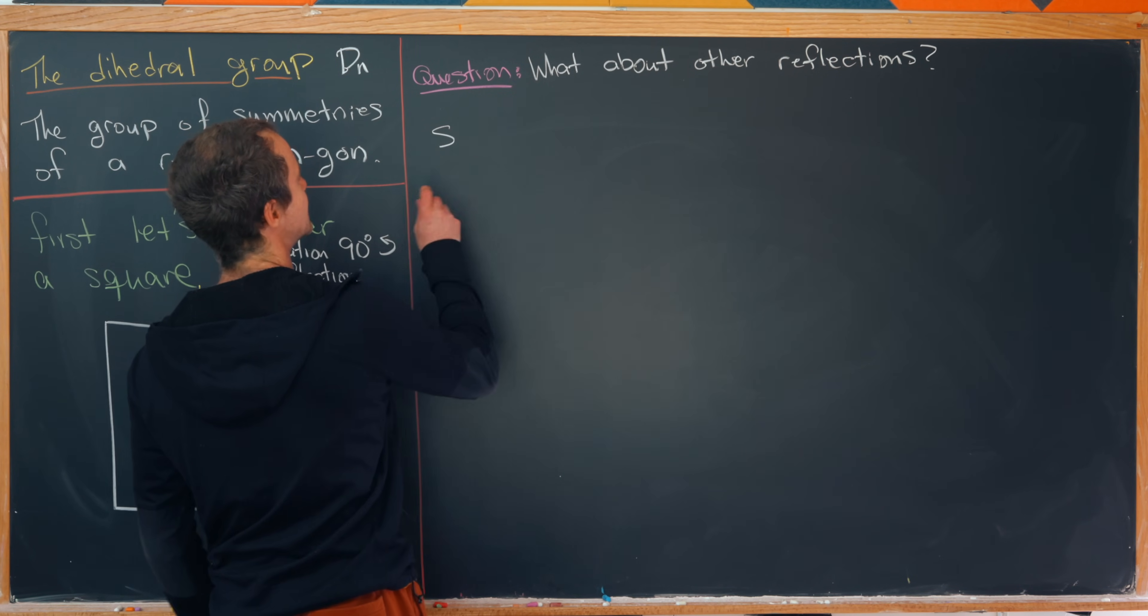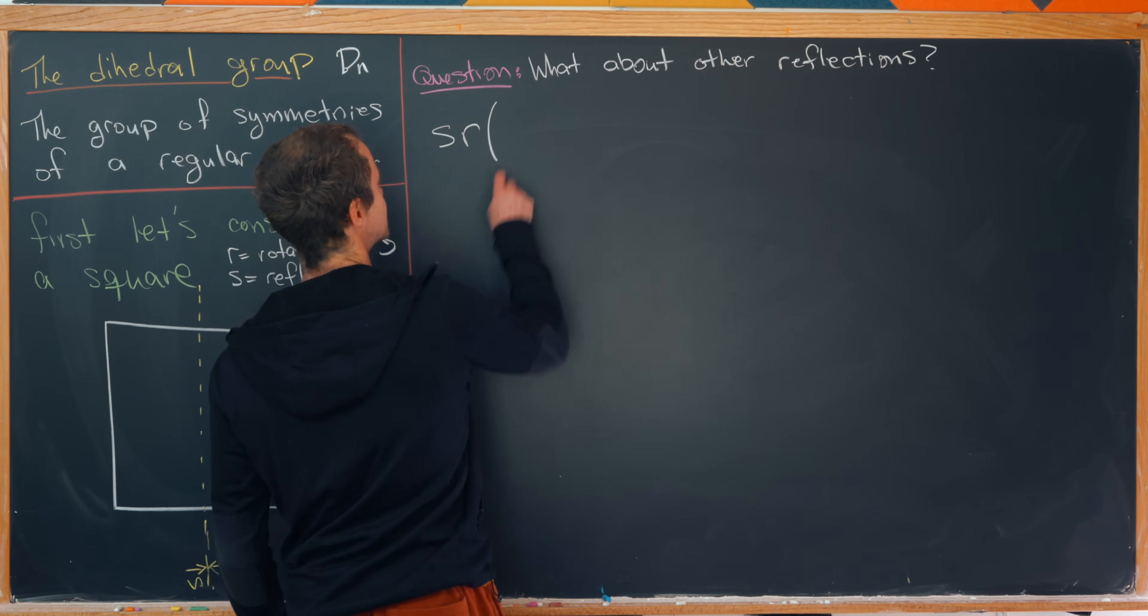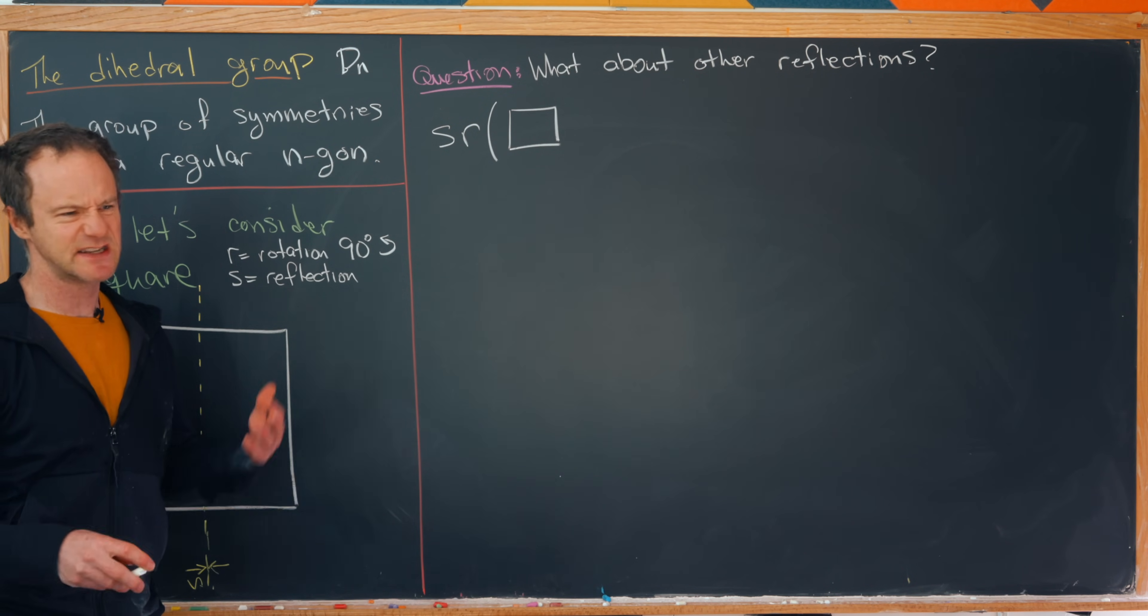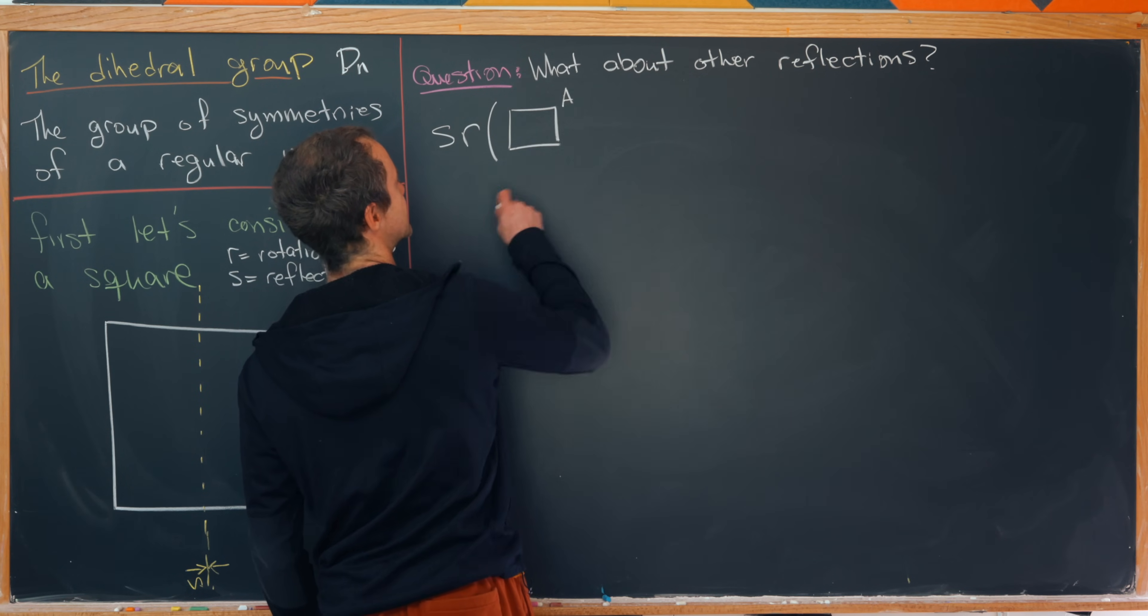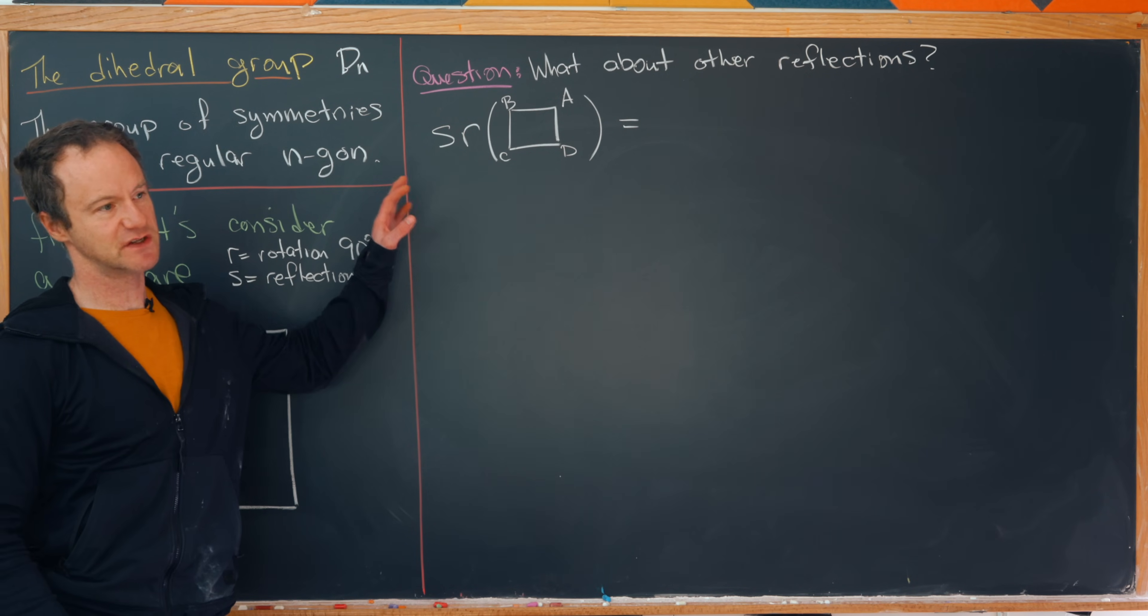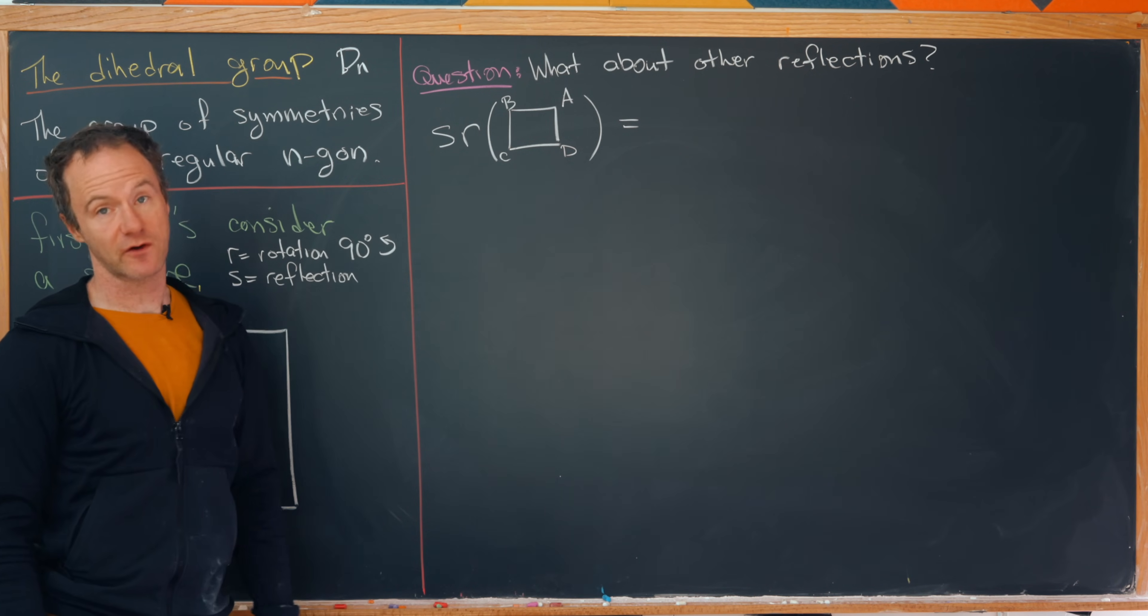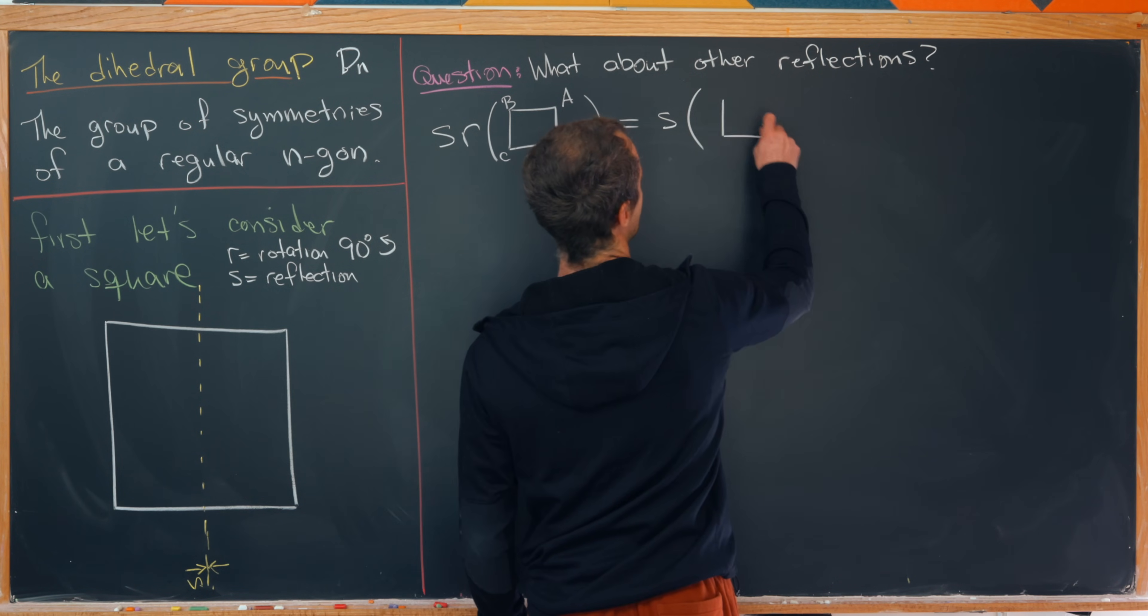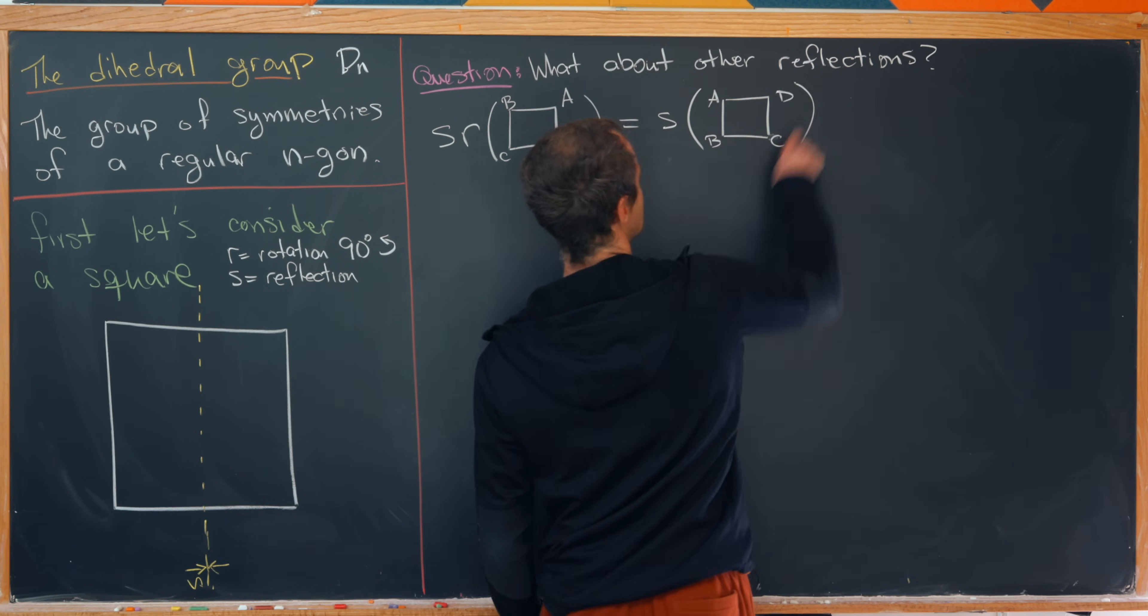And we'll see that by doing the following calculation. So let's do s composed with r and see what it is. But in order to see what it is, we need to put a square inside of this operation and see what it ends up doing to the square. So let's give this some names to the vertices. So let's say that's a, b, c, and d. So since these are acting like functions, we're composing from the inside to the outside. So operating by r will rotate first 90 degrees counterclockwise.